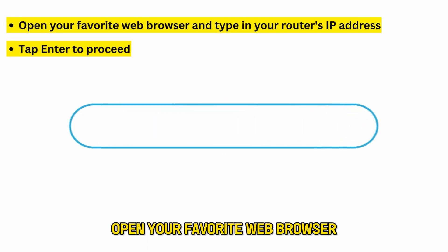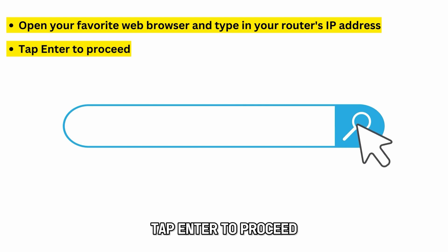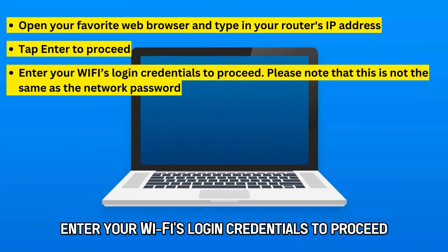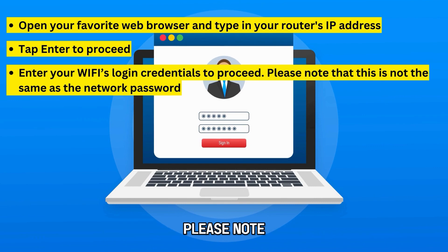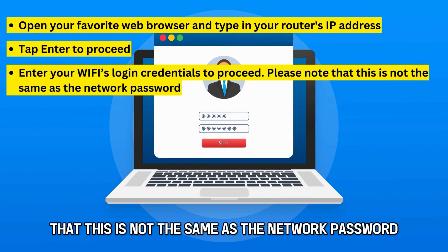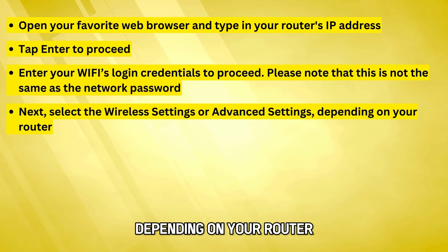Open your favorite web browser and type in your router's IP address. Tap Enter to proceed. Enter your Wi-Fi's login credentials to proceed. Please note that this is not the same as the network password. Next, select the wireless settings or advanced settings depending on your router.